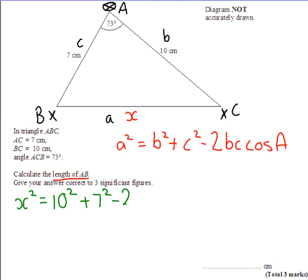take away 2 times B, which is 10, times by C, which is 7, times by cosine A, which is cosine 73.